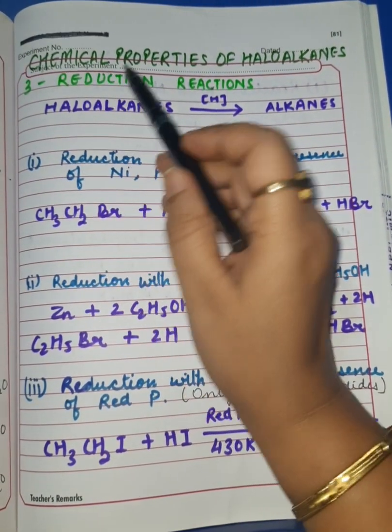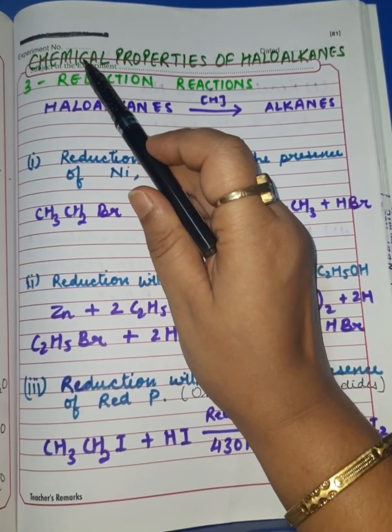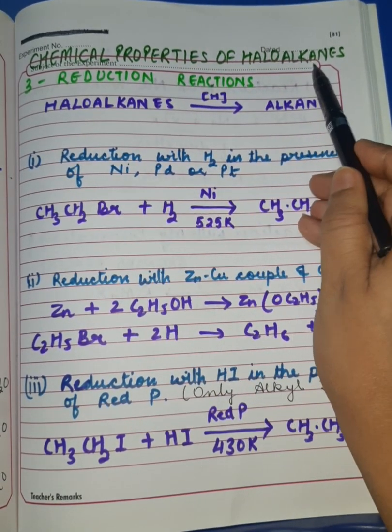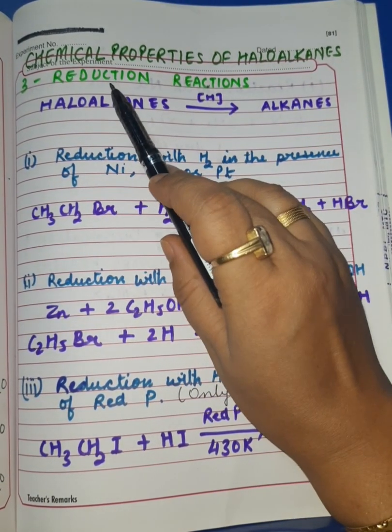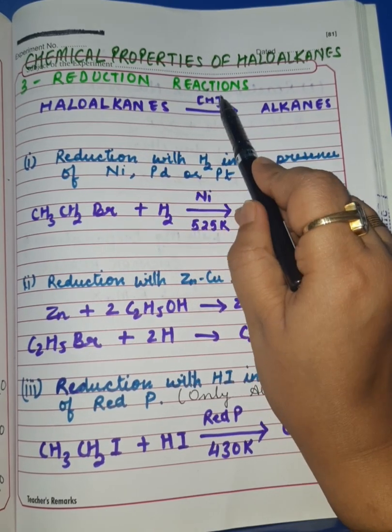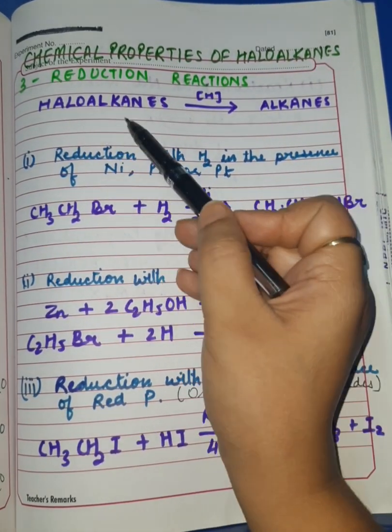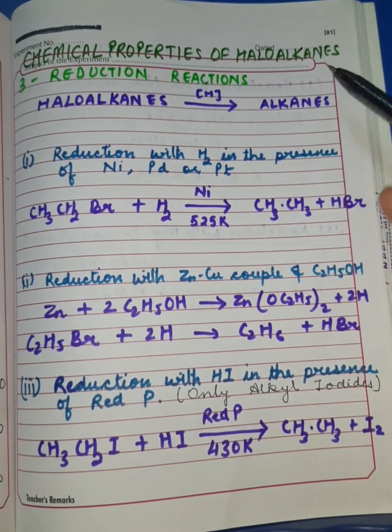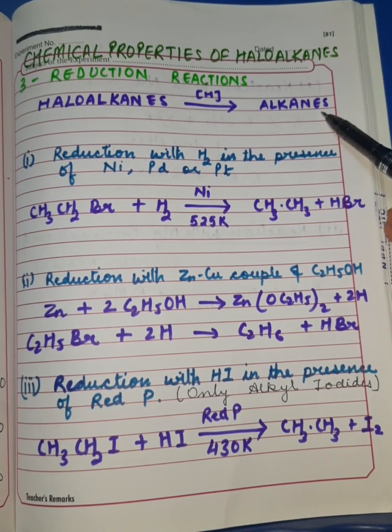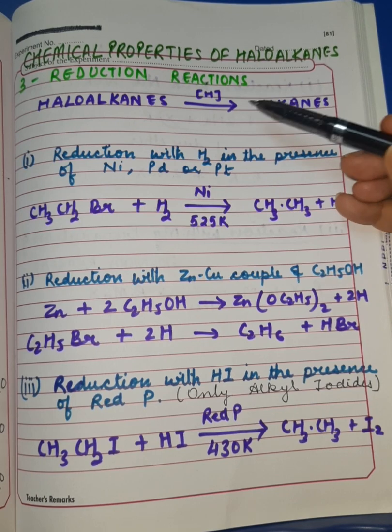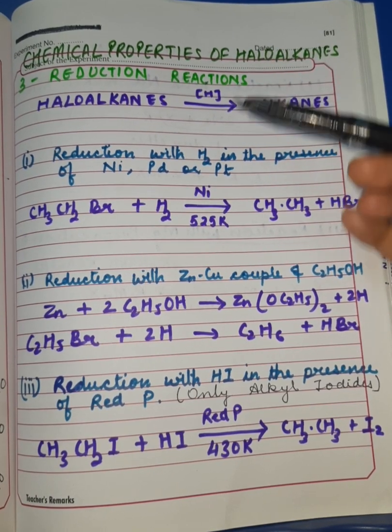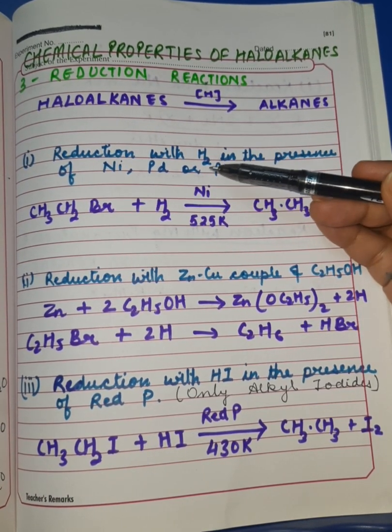My dear students, it is Part 3 of the series on chemical properties of haloalkanes. In this part, I will be teaching you about the reduction reactions of haloalkanes. Haloalkanes can be reduced to their respective alkanes, and these reductions can be carried out in many ways. I have listed out three important ways.